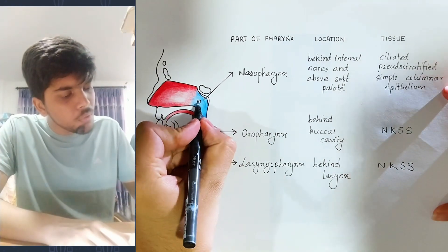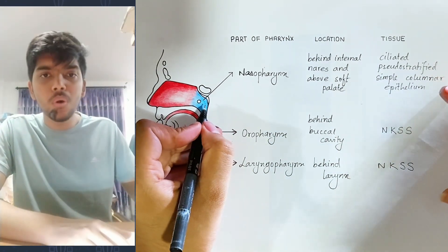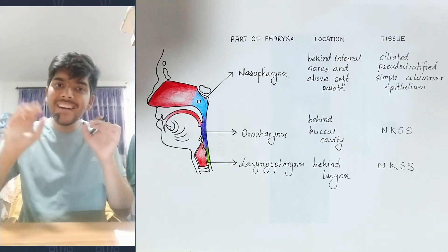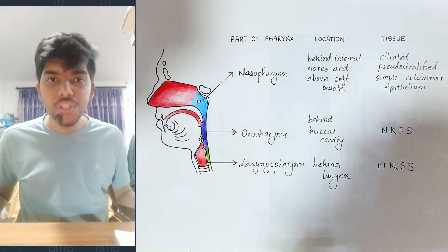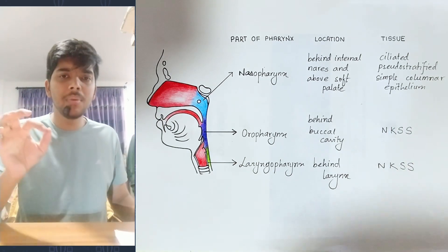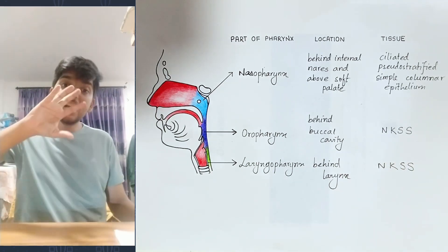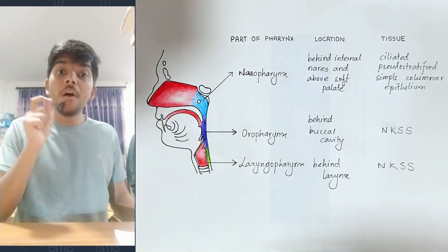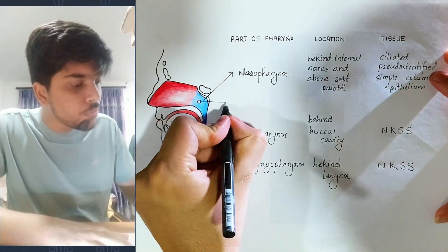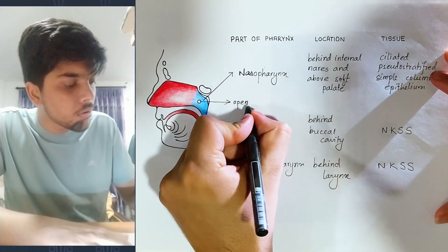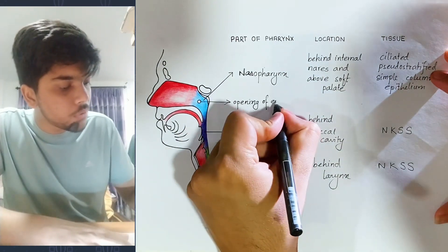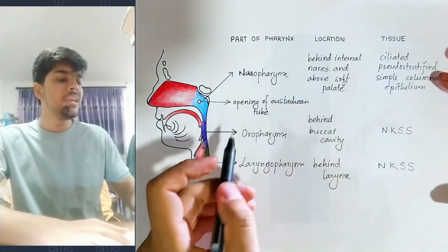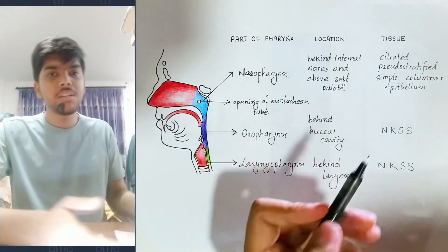In the nasopharynx, you have the eustachian tube opening. The ear has three parts: external ear, middle ear, and internal ear. The middle ear is open via the eustachian tube. For pressure balance, the middle ear opens through the eustachian tube into the pharynx — specifically into the nasopharynx. So the nasopharynx is connected to the middle ear through the eustachian tube.